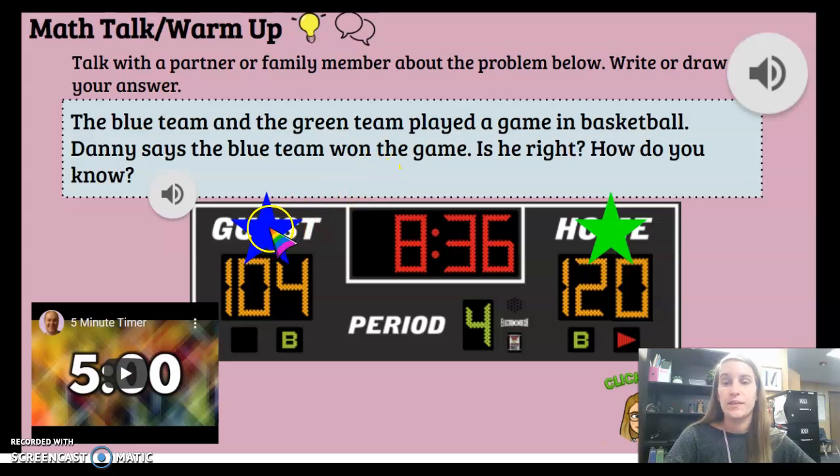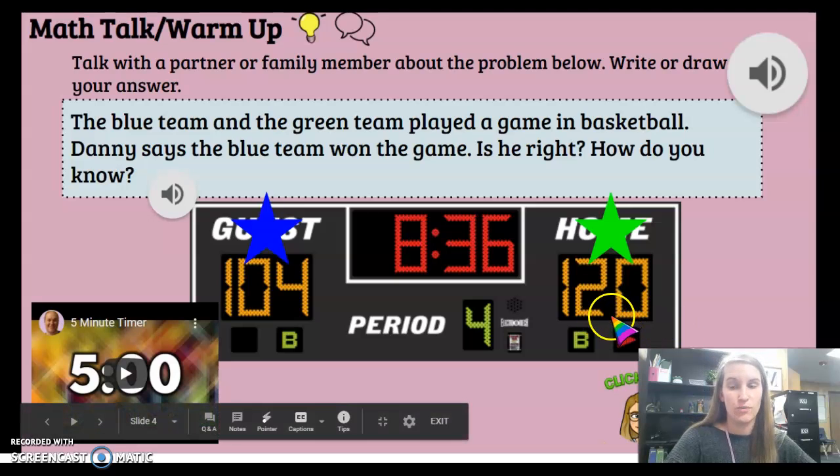Well, let's look. The blue team scored 104 points. Can you say that? 104. Okay. Well, the green team scored 120 points. Can you say that? 120. Great job.